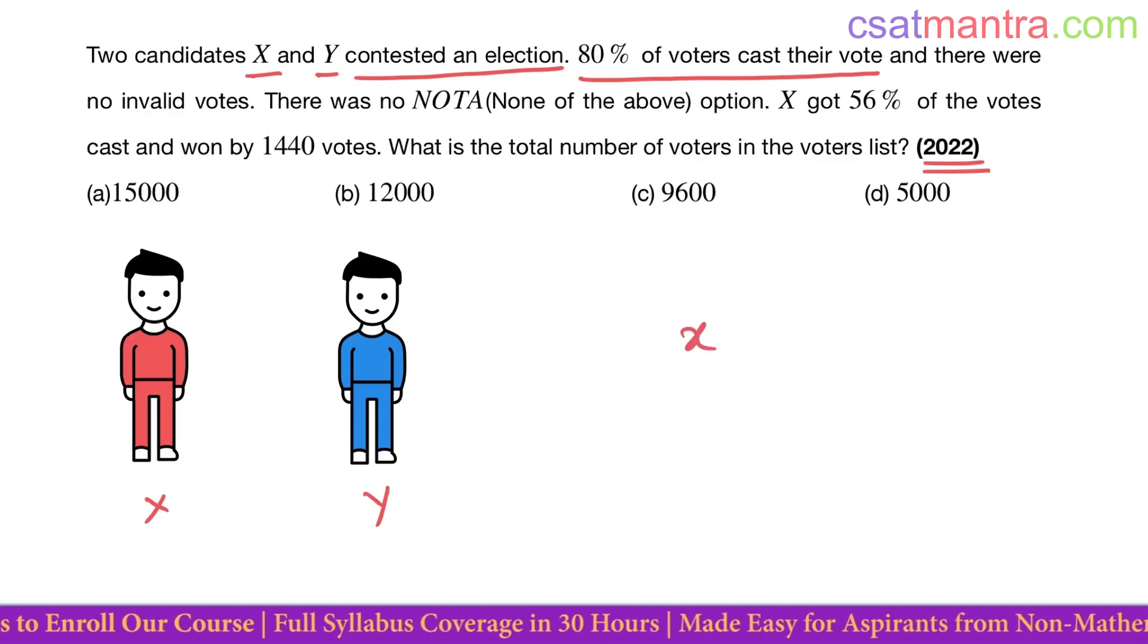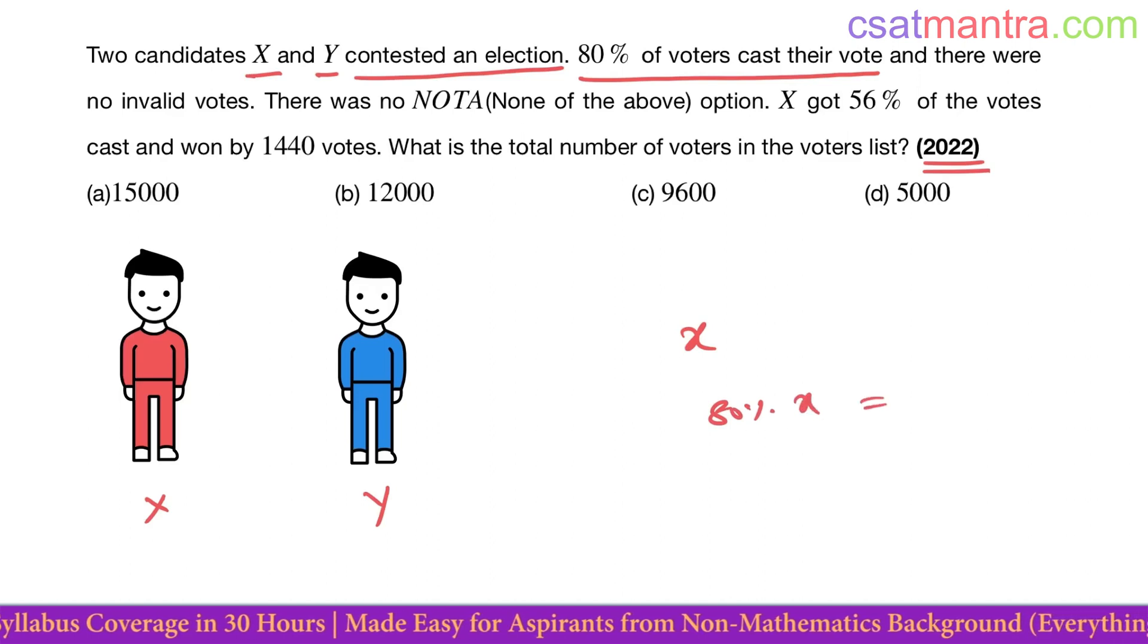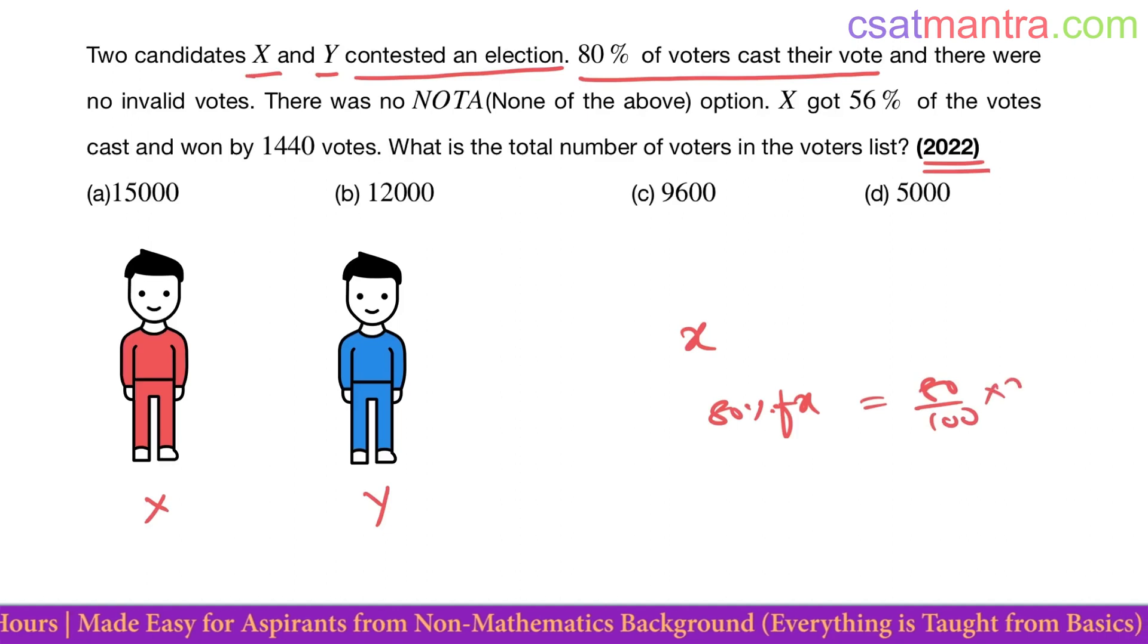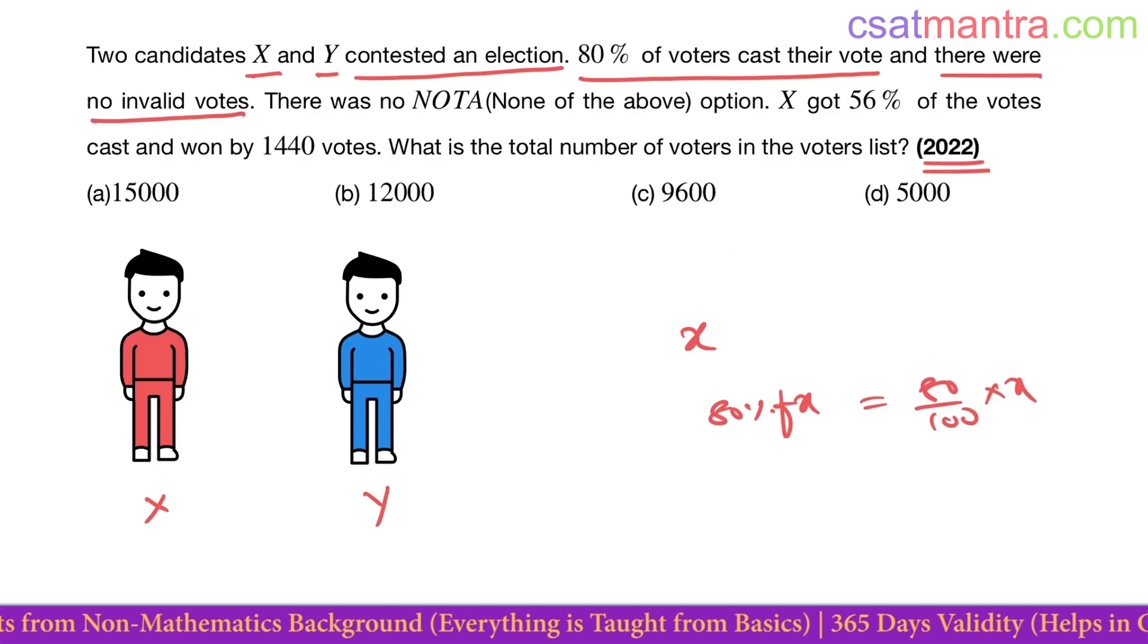If you take X, the people who cast their vote would be 80 percent X. That is 80 by 100 into X. And there were no invalid votes, all these votes are valid.